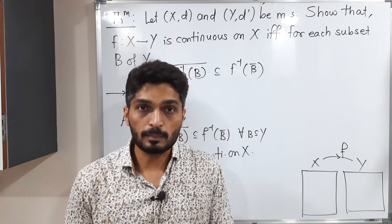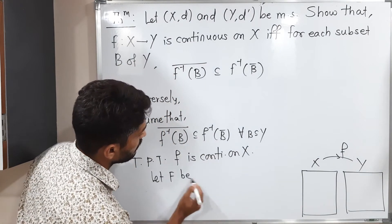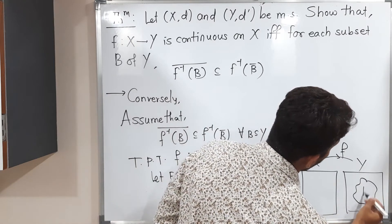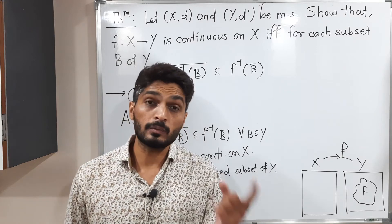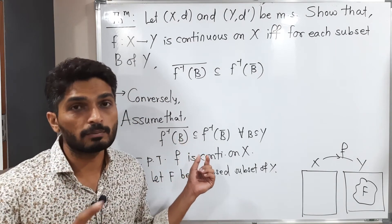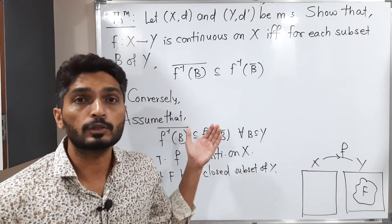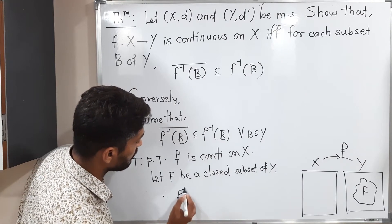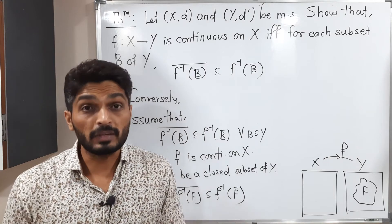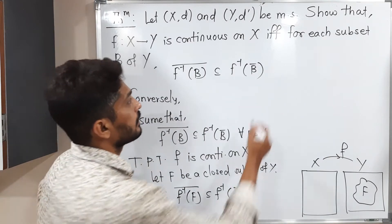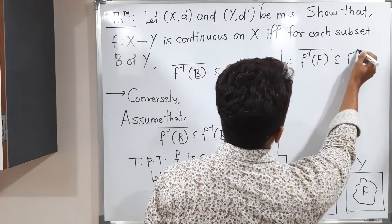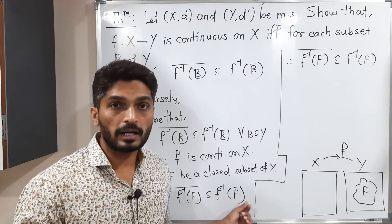Let F be a closed subset of Y. We have to prove that its inverse image f inverse of F is closed in X. Since F is a subset of Y, we can apply the given condition to F: f⁻¹(F-bar) ⊆ f⁻¹(F)-bar. But since F is closed, F-bar equals F. So therefore f⁻¹(F-bar) ⊆ f⁻¹(F). I am calling this statement number one.